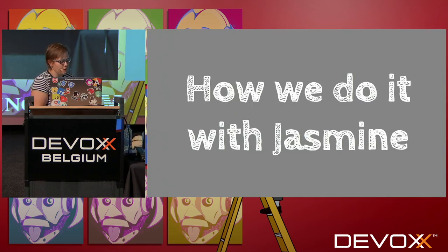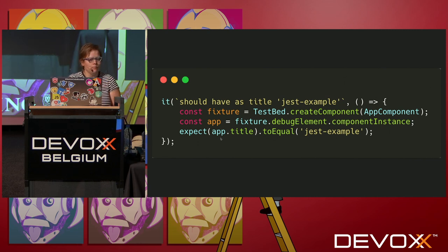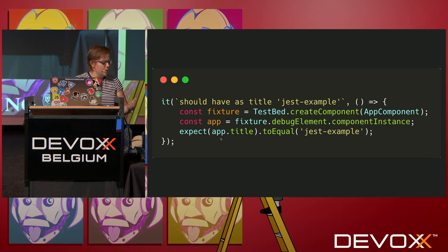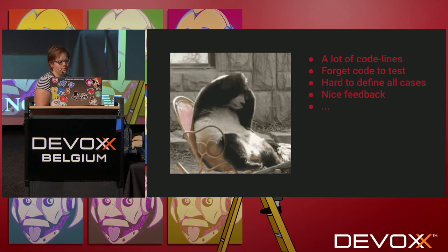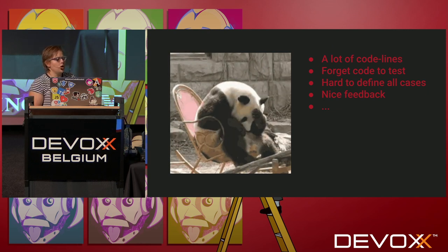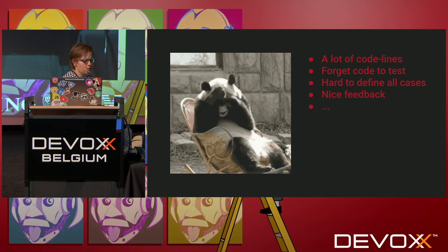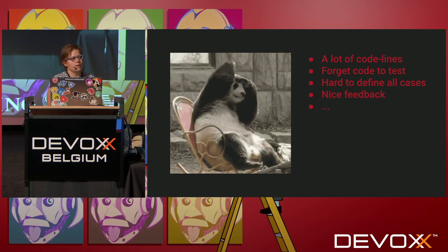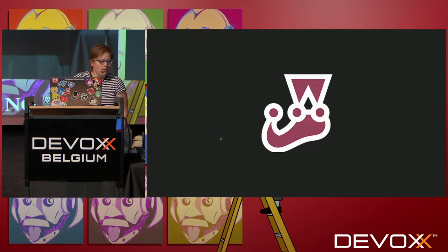How do we do it with Jasmine? We write the code, create a component, and accept that the title will be just 'example'. But there are disadvantages: if I change the amount of images, it will never be tested. To test the complete HTML with Jasmine, we'd have a lot of code lines, we'll forget some things to test, and if we change something without adapting tests, it's lost. It's also hard to define all cases, and the error feedback — the stack trace — is hard to debug.